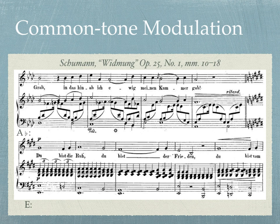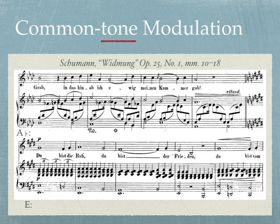Another type of modulation you may encounter is called common tone modulation. In the same way that two keys can be connected by a common chord, they can also be connected by a common tone. These are different modulations, even though they sound similar, so please make note of their names. Common tone modulation often leads us to distantly related keys, as only one tone is shared in common with the next chord. Modulations like this often sound abrupt because there is little to connect the keys together. Listen to this example from Schumann's Widmung and see if you can identify which tone is being kept in common with A-flat major and E major.